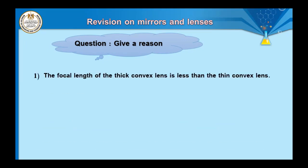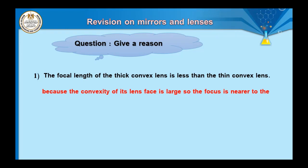Another type: give a reason. Number one: the focal length of a thick convex lens is less than that of a thin convex lens. Because the convexity of the thick lens face is larger, the focus is nearer to the optical center, so the focal length becomes smaller. The thin convex lens has a larger focal length because its convexity is less, and the focus is farther from the optical center.